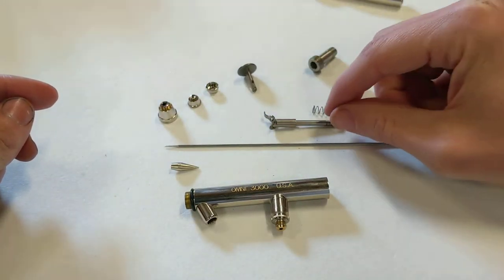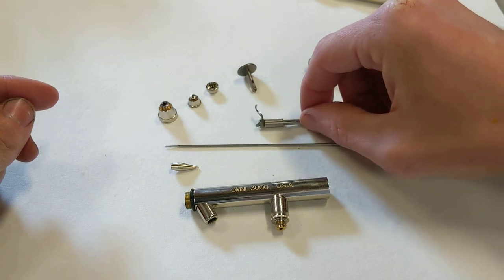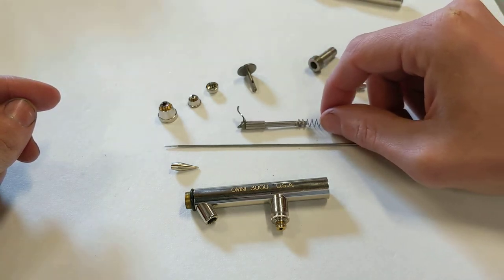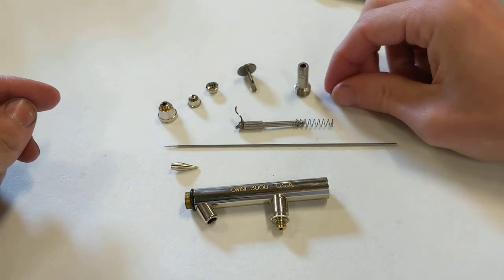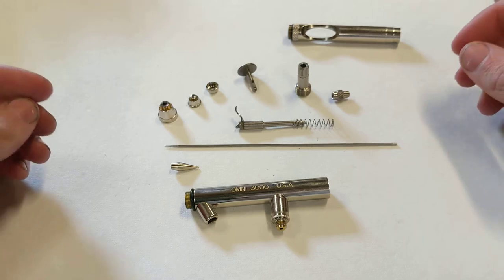The trigger, the needle tube rocker assembly, the spring that goes on that, the tighten-down thing, and then the chuck nut and the handle. Those are the parts.